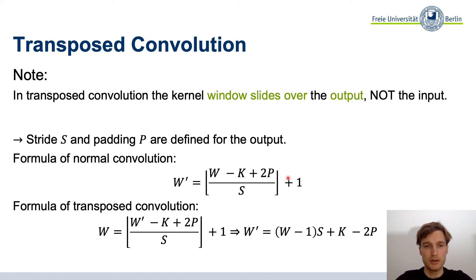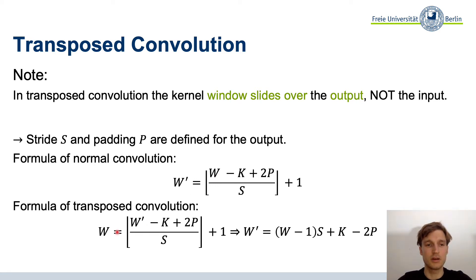We can also see this as sliding the window over the output instead of the input. To calculate the transposed convolution output size formula, since things get mapped the opposite way, we just interchange W' with W in the normal formula, rearrange, and get: W' = (W − 1)×stride + kernel − 2×padding.